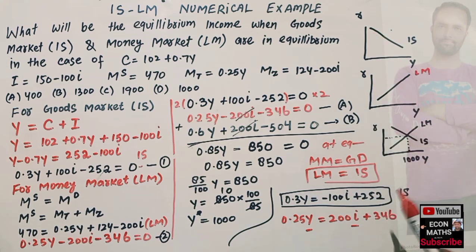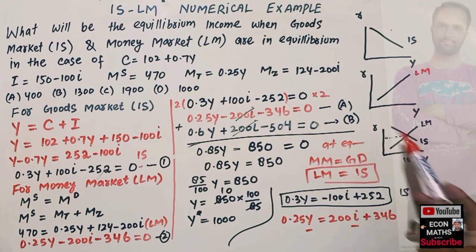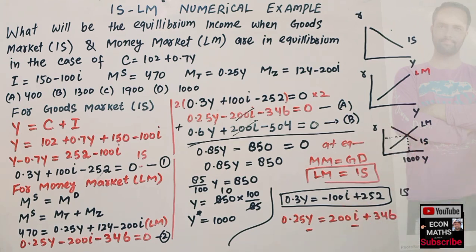Simultaneous equilibrium requires IS = LM. The intersection point of the IS and LM curves gives us the equilibrium level of income, which is 1000. I hope I made myself clear in this video. Thank you.